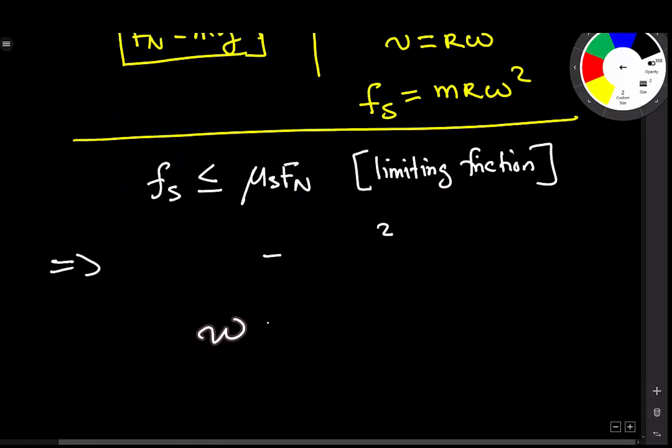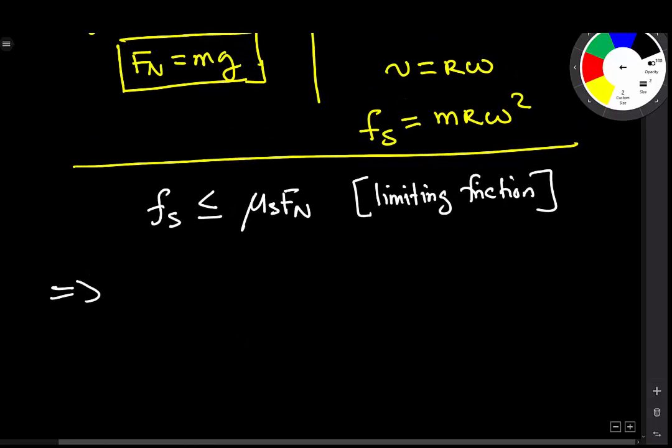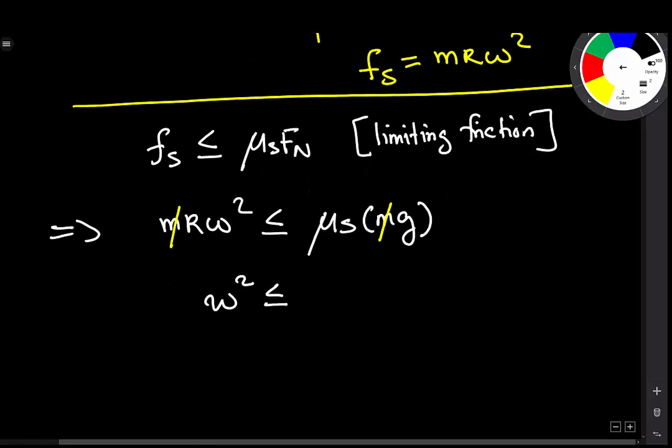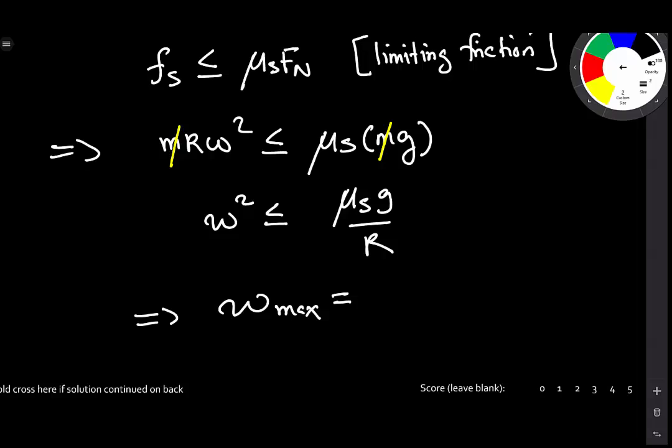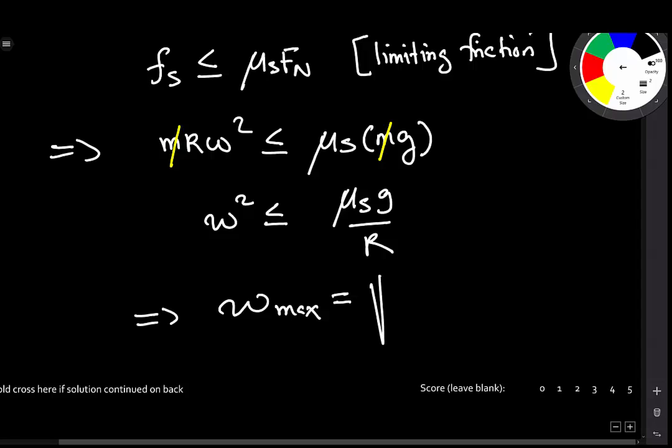Therefore, we have M R omega squared less than or equal to mu S multiplied by Mg. M's cancel and therefore omega squared will be less than or equal to mu S G divided by R. Hence, omega max, the maximum angular speed that the turn table must have so as to maintain the coin at rest will be given by the square root of mu S G all divided by R.